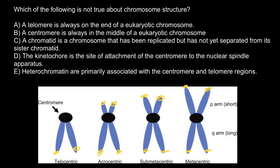Though it's called centromere — meaning center — it's not always so. In a submetacentric chromosome, the centromere is very close to the center and we still have a short arm and a long arm. In a metacentric chromosome, the two arms are the same size and the centromere is in the center. So this is the incorrect statement, and this is going to be our choice.